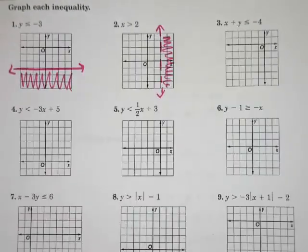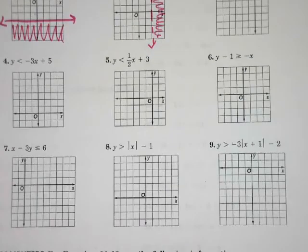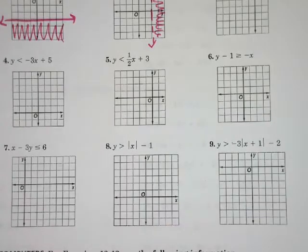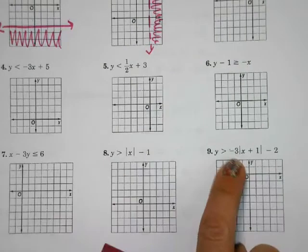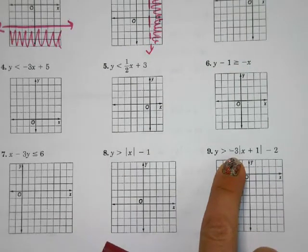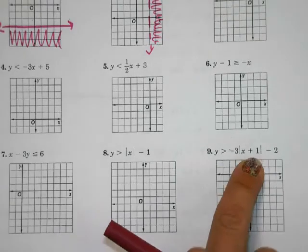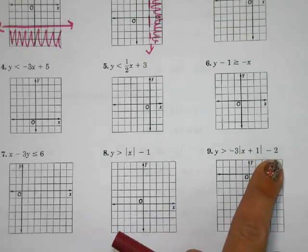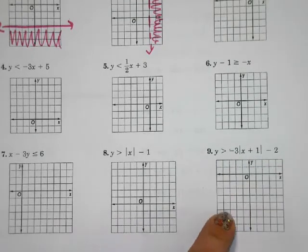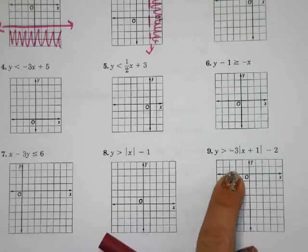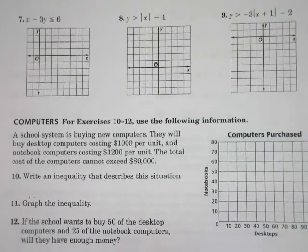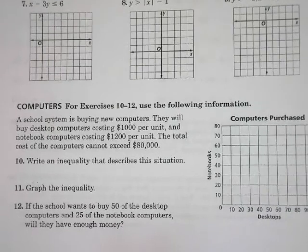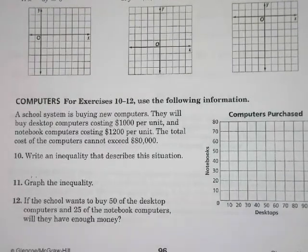Same with number 6. You're going to decide whether it's solid or dashed, then graph it and shade. Number 8 and number 9 are the only two with absolute values. This one's moving your absolute value down. This one has a negative so it's going to be an upside-down v, the slope is different so it'll be skinnier, you're going to move it to the left and down, so your vertex should be somewhere in the third quadrant.